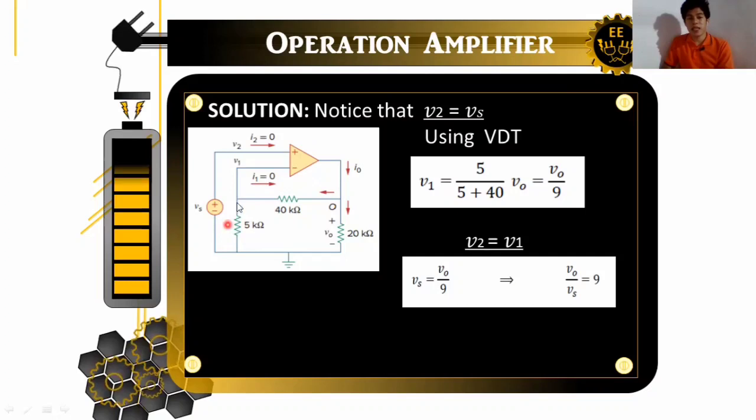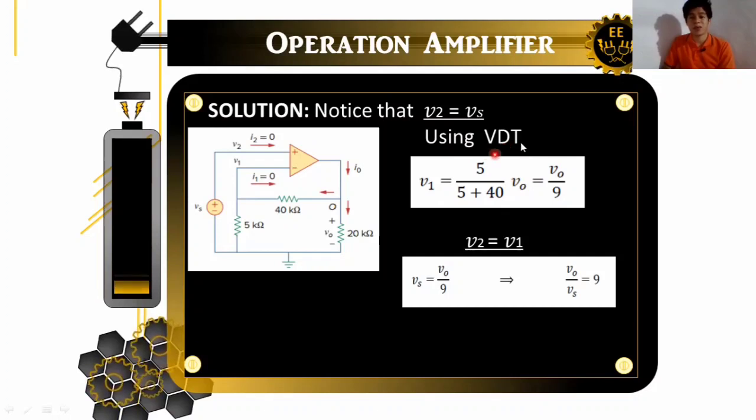So, if you notice, this setup is familiar. This is our setup when we are using voltage division theorem. So, we can use voltage division theorem in finding our V sub 1. Because V sub 1 is the voltage across our 5 kilo ohms. We will use this to find our V sub O over V sub S. So using our VDT, our V sub 1 is equal to 5 over 5 plus 40 times our V sub O. Using the voltage division theorem. So, if we add and divide, we will get V sub O over 9. That is our V sub 1.